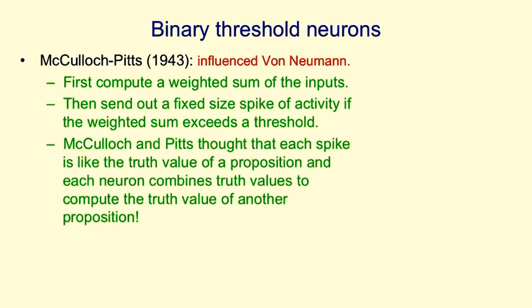McCulloch and Pitts thought that the spikes were like the truth values of propositions. So each neuron is combining the truth values it gets from other neurons to produce a truth value of its own. And that's like combining some propositions to compute the truth value of another proposition.